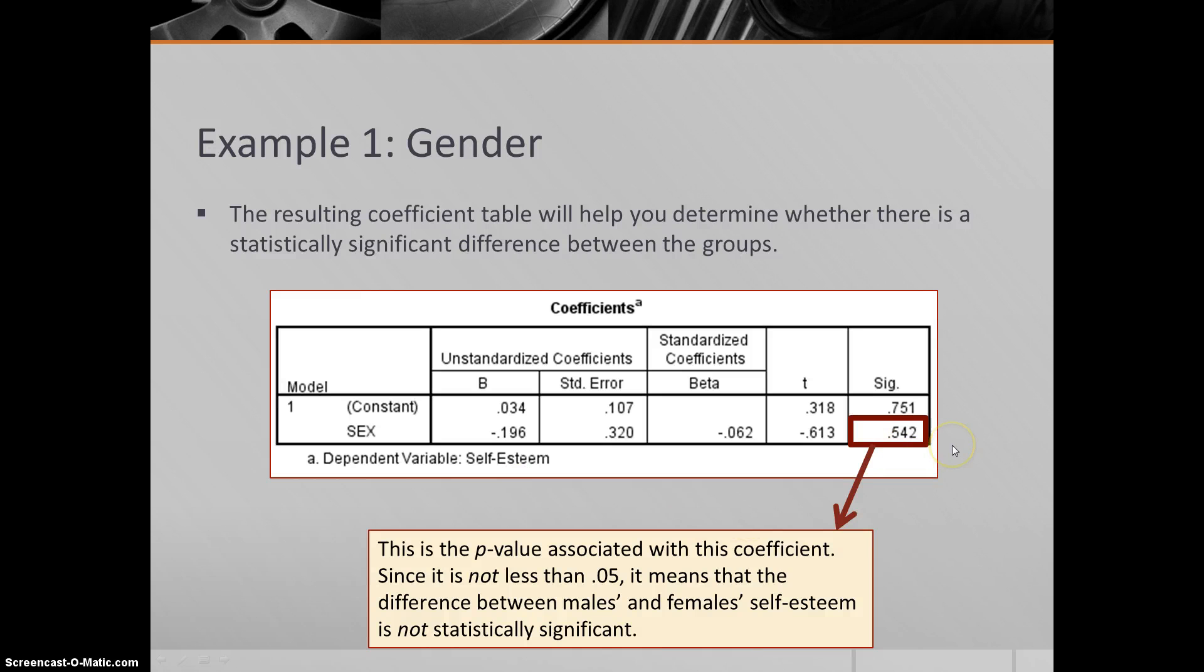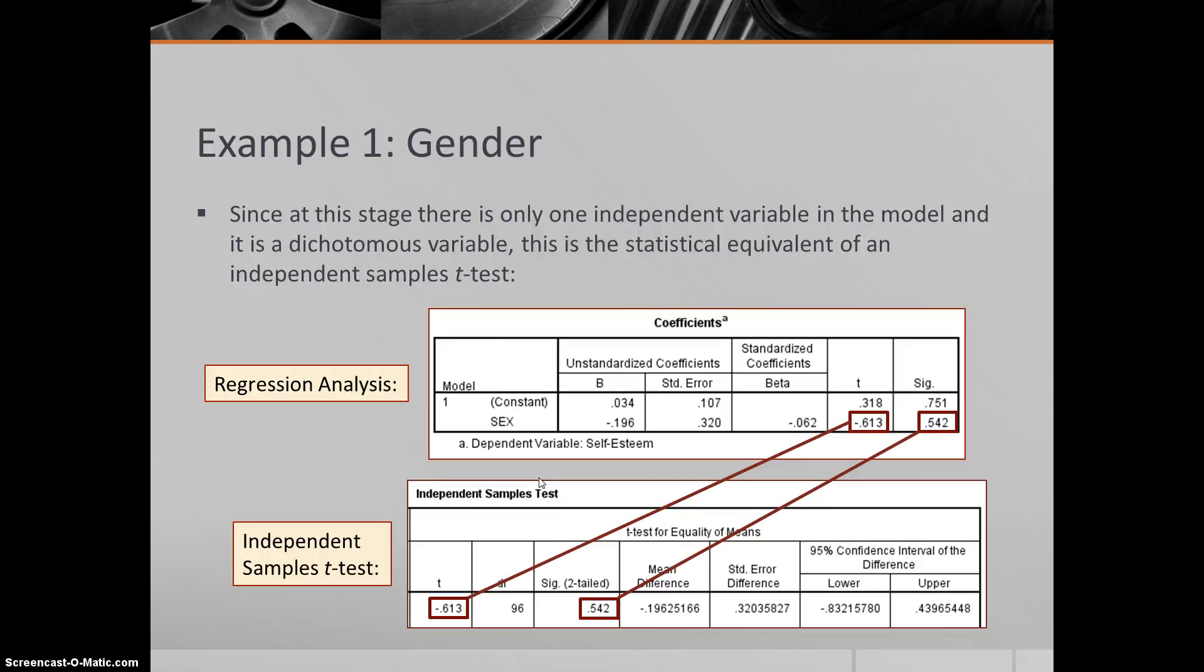Over here, we want to take a look at the significance level associated with that coefficient. In this case, it's over 0.05. 0.05 is that magic number for statistical significance. It must be below that. In this case, it's far over 0.05. There is not a statistically significant difference between male and female self-esteem. That's how we would interpret this table.